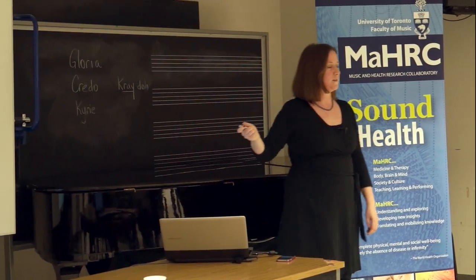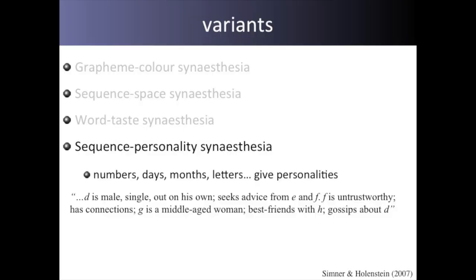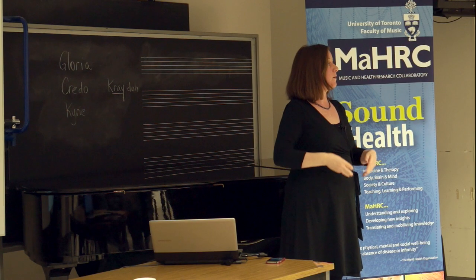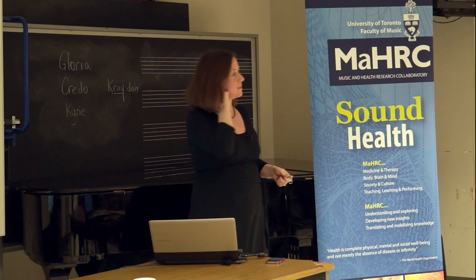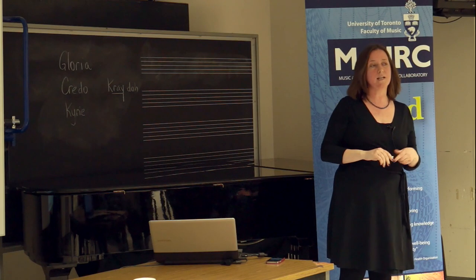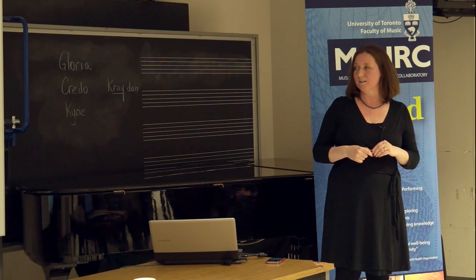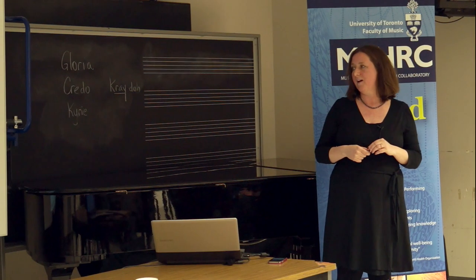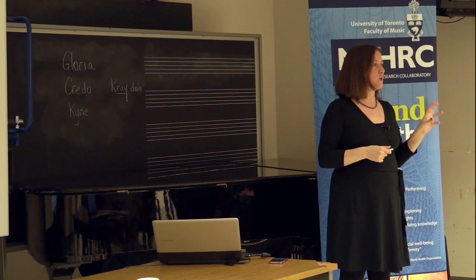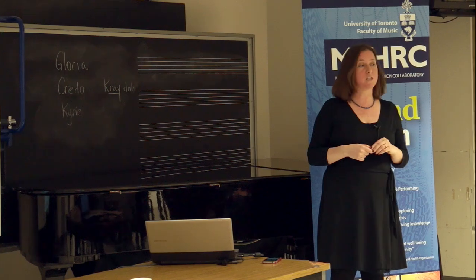Last one — probably my favourite kind of synesthesia: ordinal-linguistic personification, or sequence-personality synesthesia. Also triggered by sequences — letters, days of the week, numbers. But instead of having colours, the synesthetic experience is a personality type. Here's an example from a synesthete we tested in 2007. For her, D is male, single, out on his own, seeking advice from E and F. F is untrustworthy with dubious connections. G is a middle-aged woman, best friends with H. They get together and gossip about D. She has very in-depth personalities for all of the alphabet.